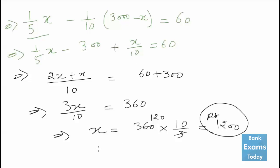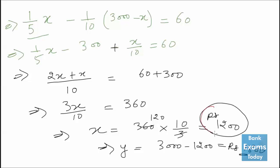If you want the value of Y, simply deduct 1200 from 3000, and that is rupees 1800. The question asked for the cost price of the horse, and that is rupees 1200 — that is our answer.